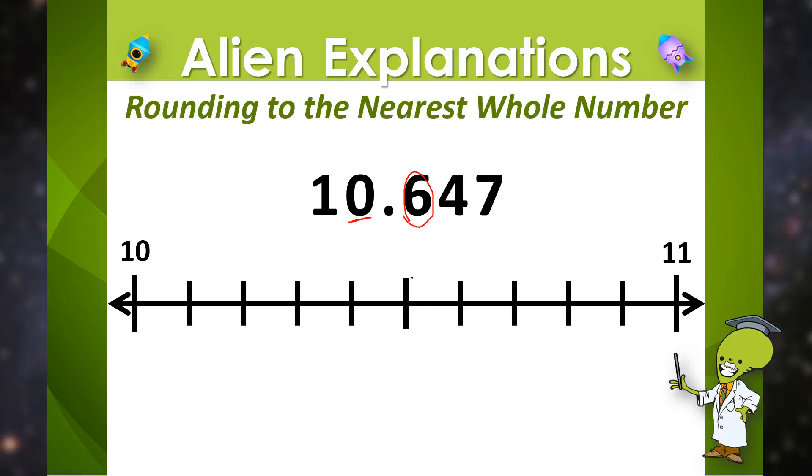So if we were to place 10 and 6 tenths on a number line, we could clearly see that the value of this number is closer to 11 than it is to 10. So 10 and 647 thousandths would round to 11.